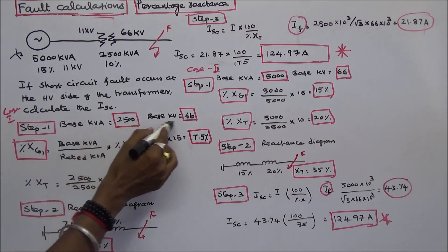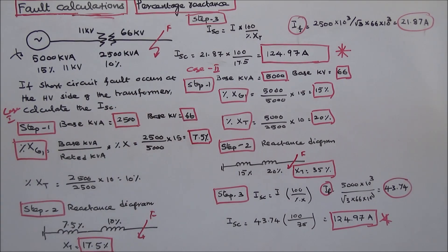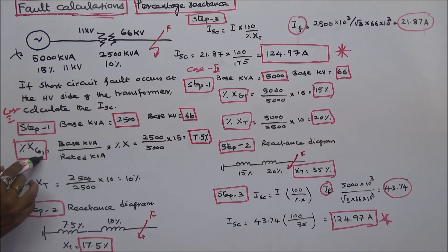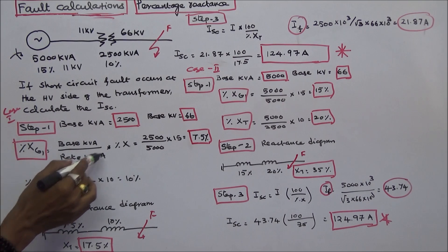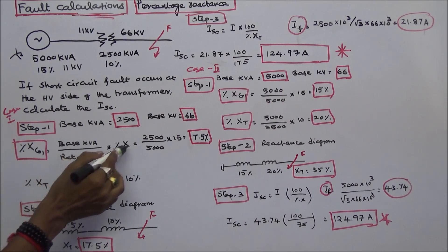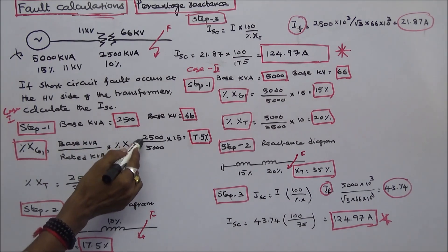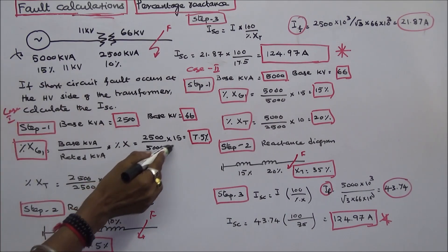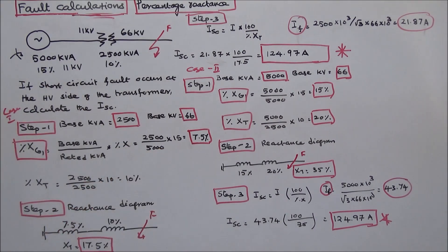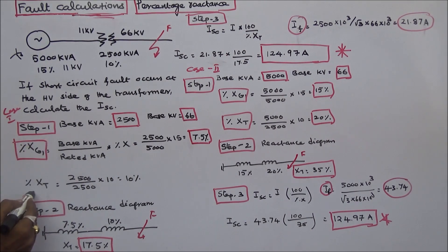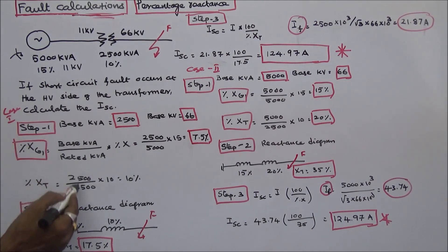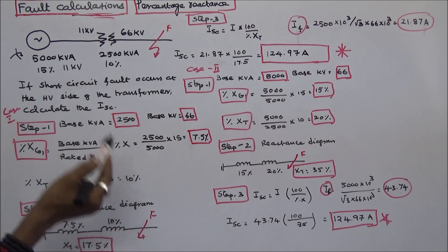Base kV is equal to 66. Step 1: calculate the percentage reactance of the generator. Percentage X_G is equal to (base kVA / rated kVA) × given percentage X. That is (2500 / 5000) × 15, which equals 7.5%. Similarly, for the transformer, percentage X_T is equal to (2500 / 2500) × 10, which equals 10%.